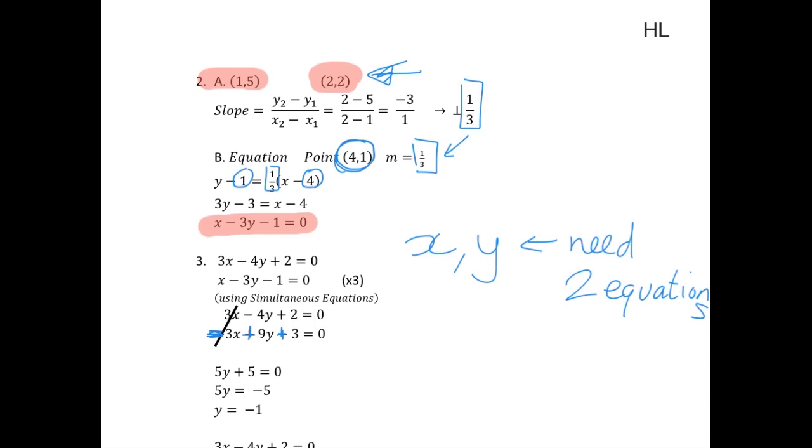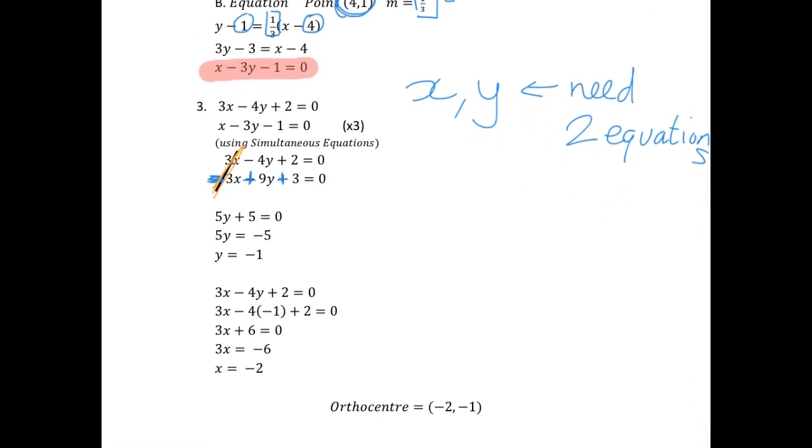Leaving us with just -4y + 9y is 5y, plus 2 plus 3 is plus 5 equals 0. Then, we just have to rearrange to get y's on one side, constants on the other, divide both sides by 5, and we get y = -1.